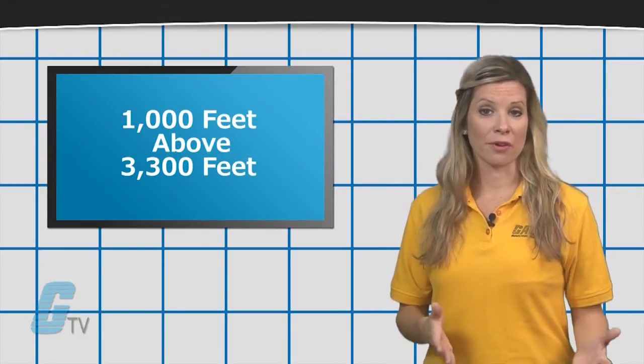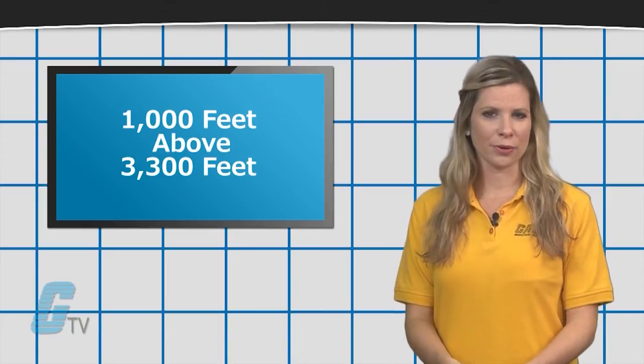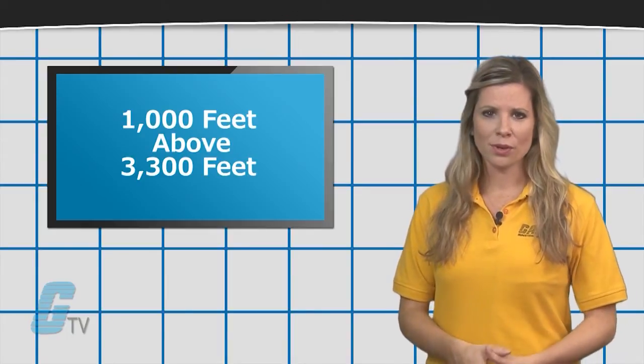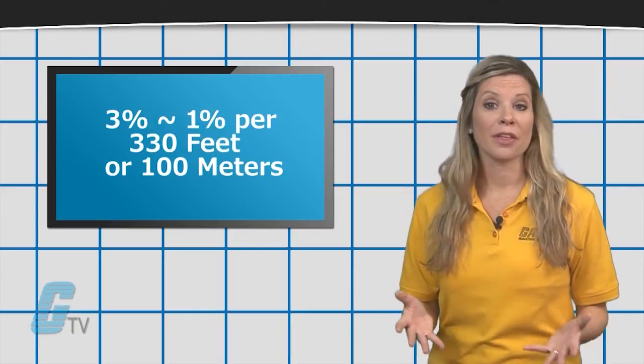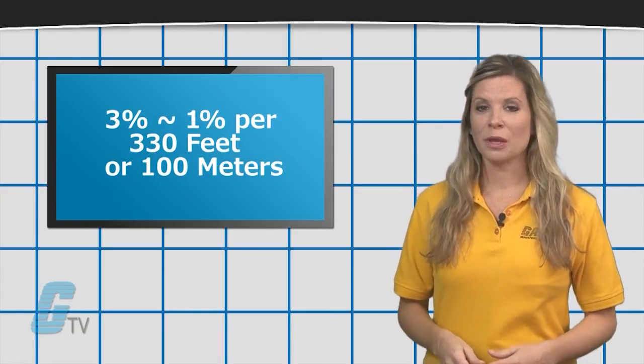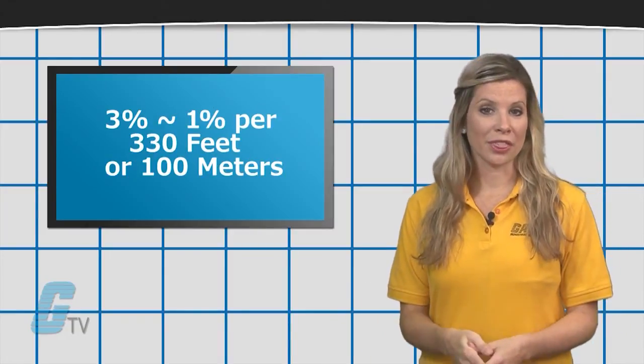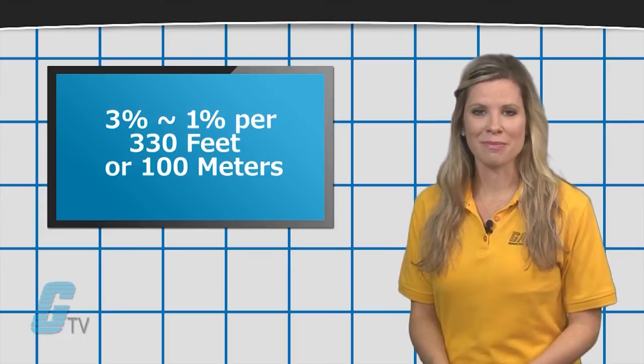A good rule of thumb is that for every 1,000 feet above the 3,300 feet, the motor de-rating factor should change by 3 percent, which is roughly 1 percent per 330 feet or 100 meters.